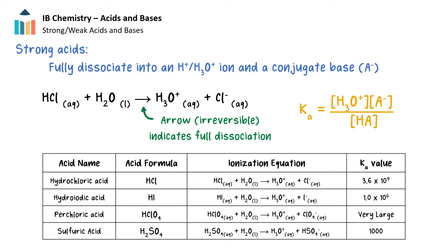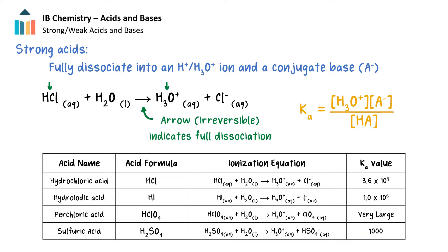Let's first talk about strong acids and bases. These are substances that will ionize or dissociate nearly completely, thereby producing larger concentrations of hydronium or hydroxide ions. Strong acids fully dissociate into a hydronium ion and a conjugate base. The Ka values, where Ka is the equilibrium constant for acids, are very large, meaning that they nearly completely ionize and produce a concentration of hydronium ion that can be assumed to be equal to the acid concentration. Here are some common examples of strong acids, and notice how all these equations are shown with a one-way arrow, which indicates that these reactions go primarily to completion and at equilibrium there is much more product than reactant. This is also shown by the large Ka values.